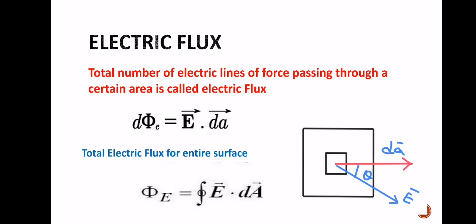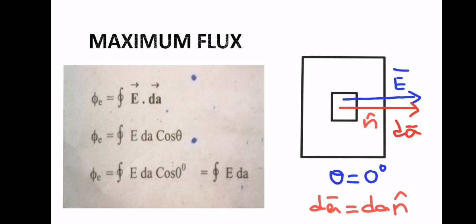The formula can be written as phi E = closed integral of E dA cos(theta). For maximum flux, the surface is held perpendicular to the electric field lines. Since the normal unit vector is perpendicular to the surface, the angle between the normal unit vector and the electric field lines is 0 degrees. Mathematically, phi E = closed integral E dA cos(0°), which gives the maximum value: phi E = closed integral E dA.